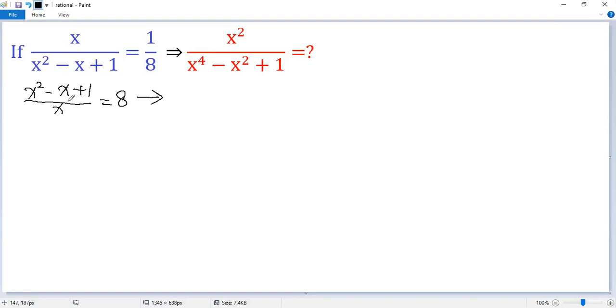Then we can write the left side as x minus 1 plus 1 over x. The right side is still 8. Both sides add 1, so we get x plus 1 over x equals 9. Denote that as equation 1.